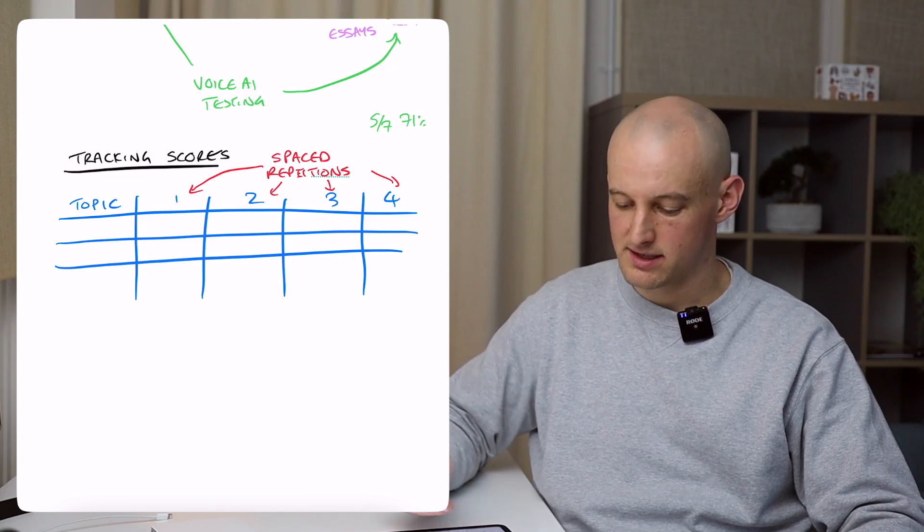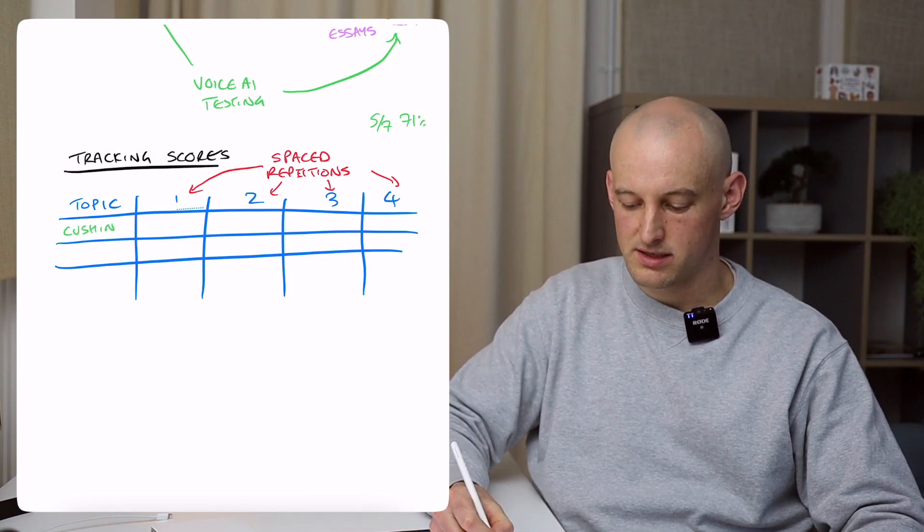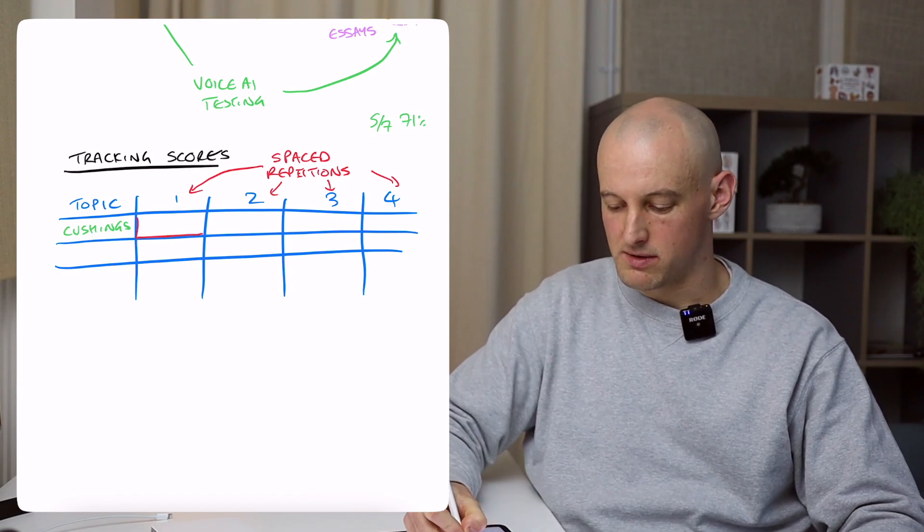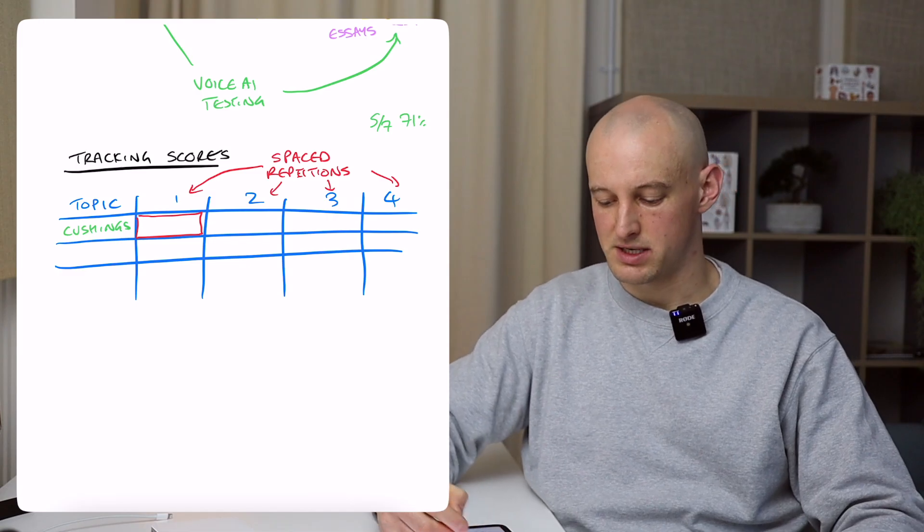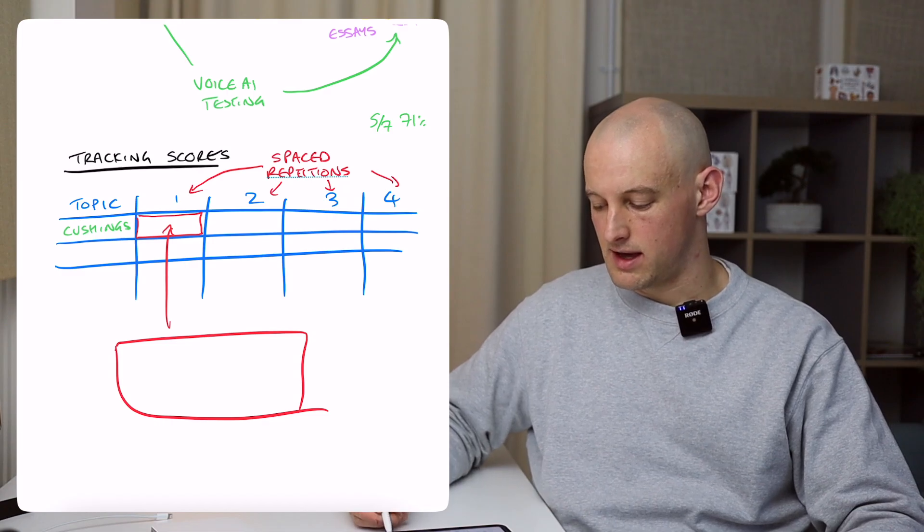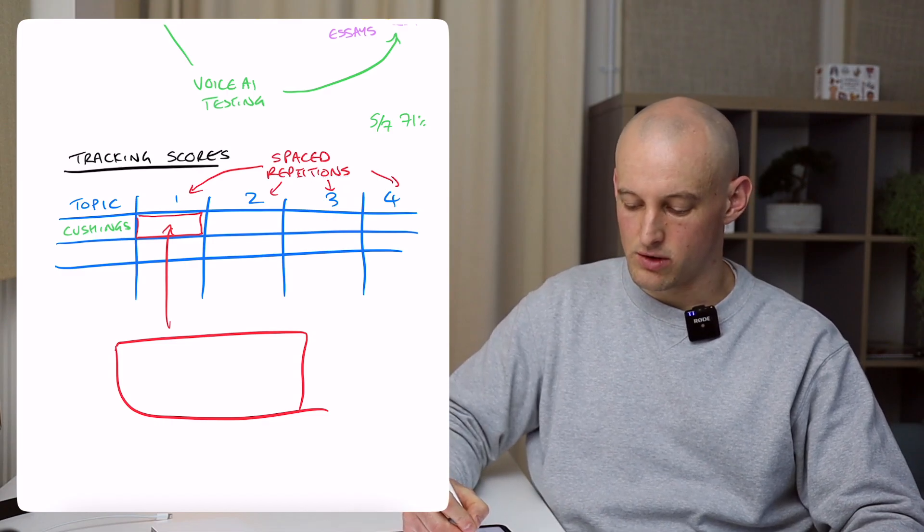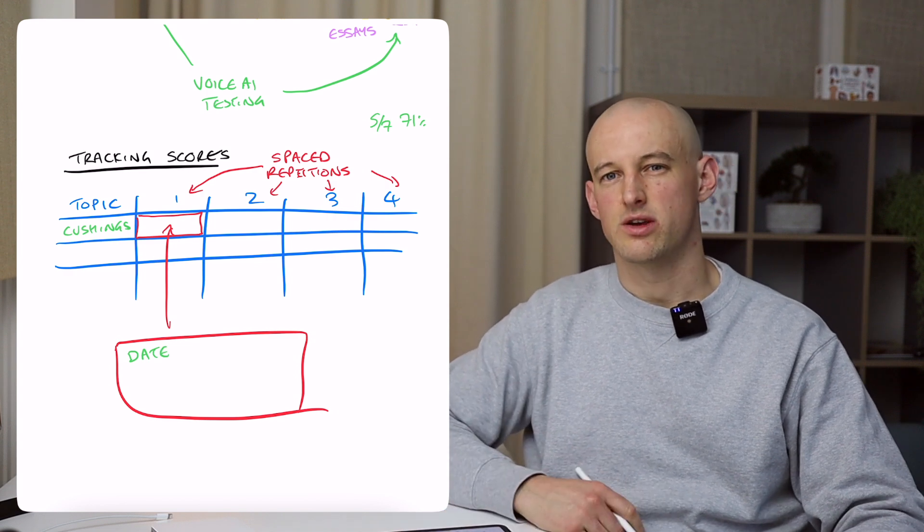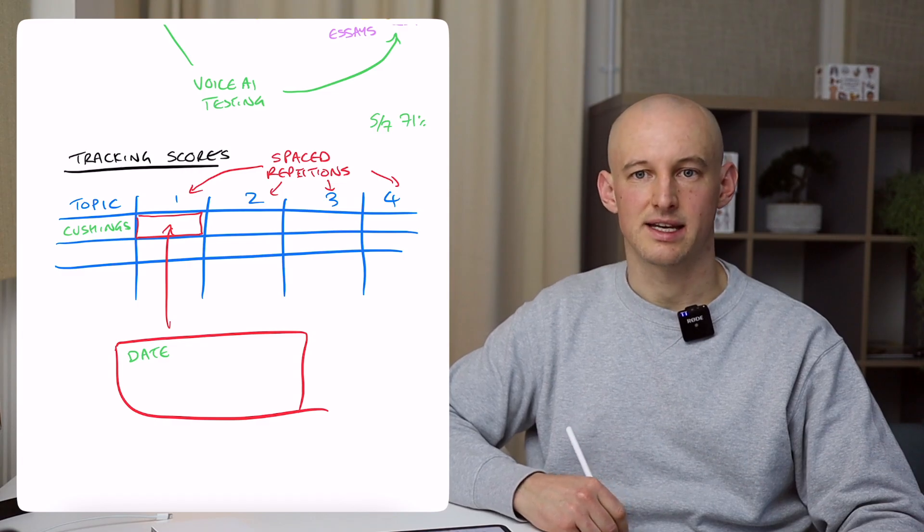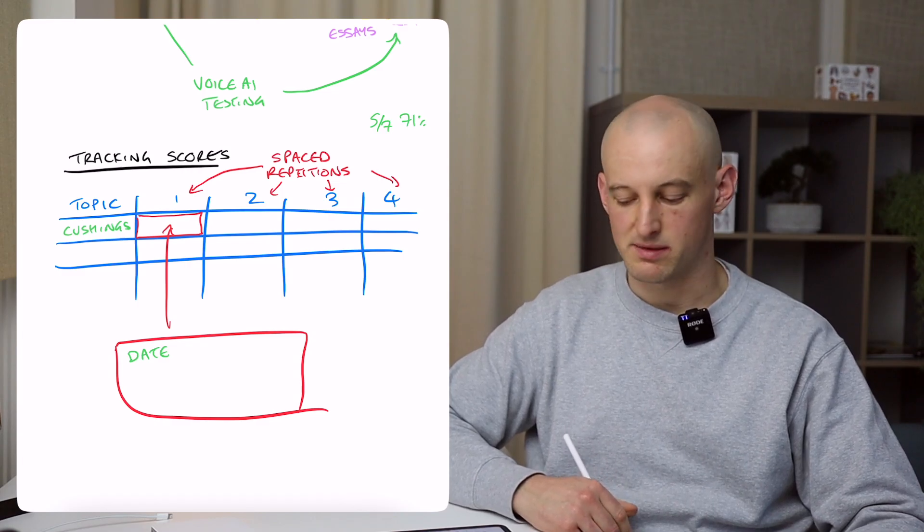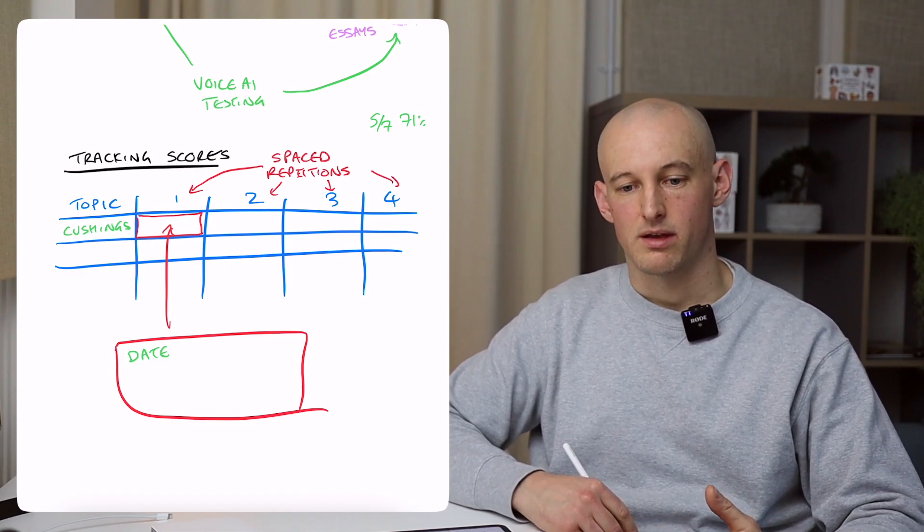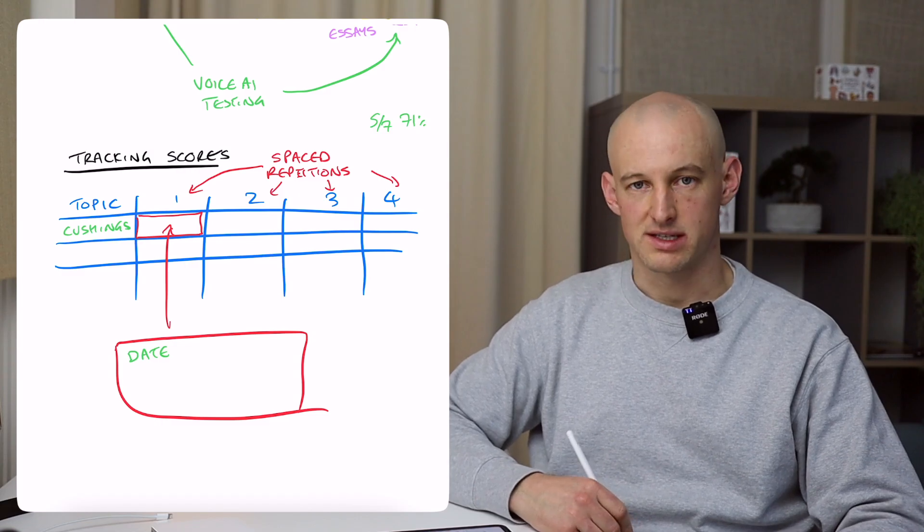So these numbers here are the spaced repetitions. So number one is the first repetition, number two is the second, et cetera. And then you'd have these topics. So let's say we're doing Cushing's, which is what we've just done. And then in this box, so we've just studied Cushing's for the first repetition. Inside this box, you would record, firstly, the date when you did it so that you can see when you need to study that again. So when you're coming back and thinking, I need to do my second repetition and space it out properly, you can see the date where you did the first repetition and wait, say 10 days or two weeks before you do the second one.